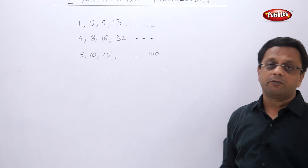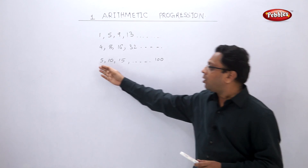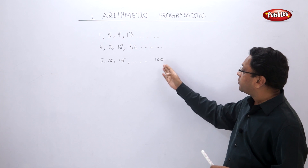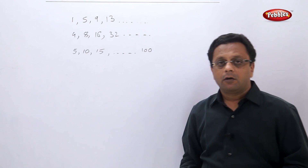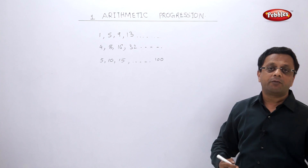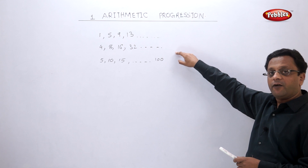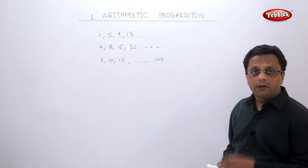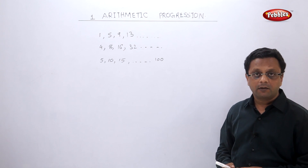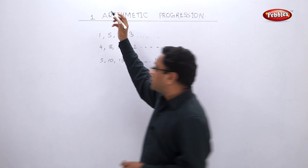For example, here are three sequences — series of numbers arranged in a specific order with a definite rule. In the first, these are all multiples of 5: 5, 10... up to 100. In the second, the rule is that each number is double the one before it: 4, 8, 16, 32, going to infinity. In the third, the difference between every two consecutive numbers is 4: 1, 5, 9, 13, 17, and so on.